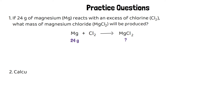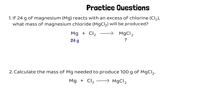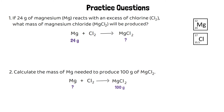The second question is quite similar: calculate the mass of magnesium needed to produce 100 grams of magnesium chloride. Using the same symbol equation, we want to make 100 grams of magnesium chloride and need to find out how many grams of magnesium we'll need. The symbols for magnesium and chlorine are shown so you can use their relative atomic masses. Pause the video and have a go at these questions.